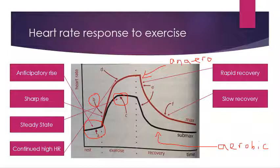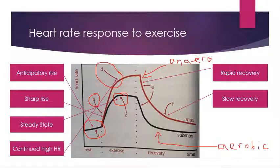The continued high heart rate applies only to the anaerobic line. After the sharp rise, heart rate remains high because we are not working in the presence of oxygen. When working hard, the heart gets right up into the anaerobic zone, close to maximum heart rate. Additionally, there are increased waste products — increased carbon dioxide and increased lactic acid — and the body works hard to try to remove these.